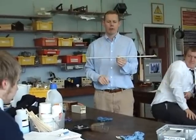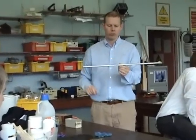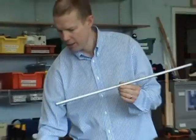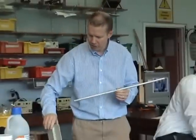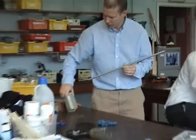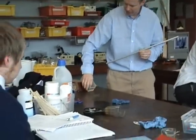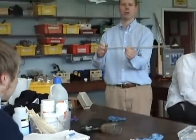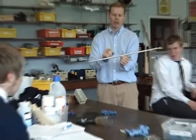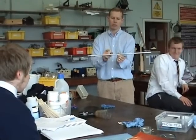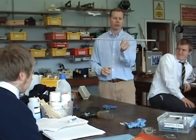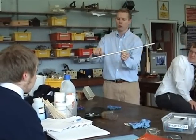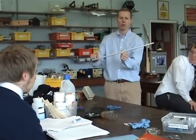Another demonstration of resonance just uses an aluminium rod and some rosin — just a type of rosin that a violin musician would use on their bows. In this case, what we're going to try and do is match the natural frequency of the rod with our fingers going up and down.